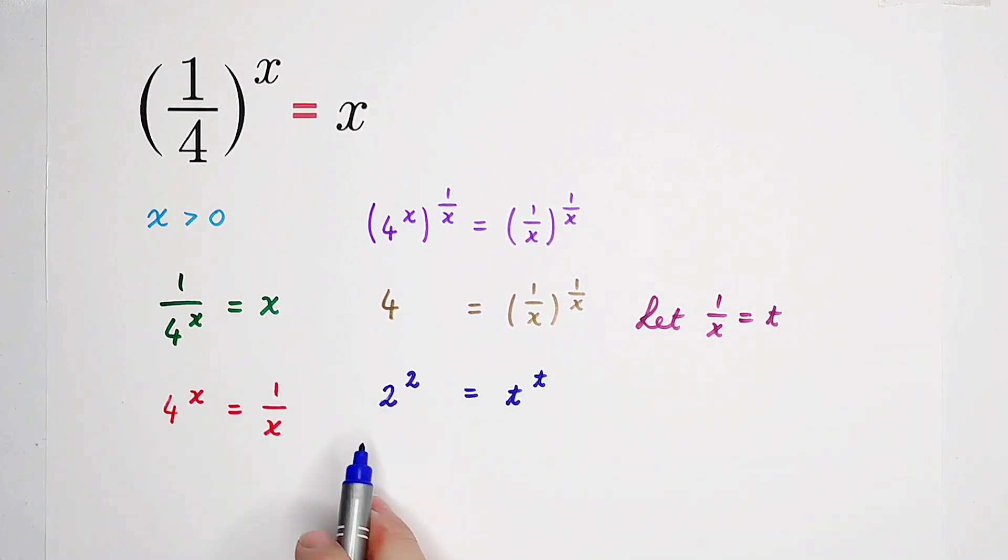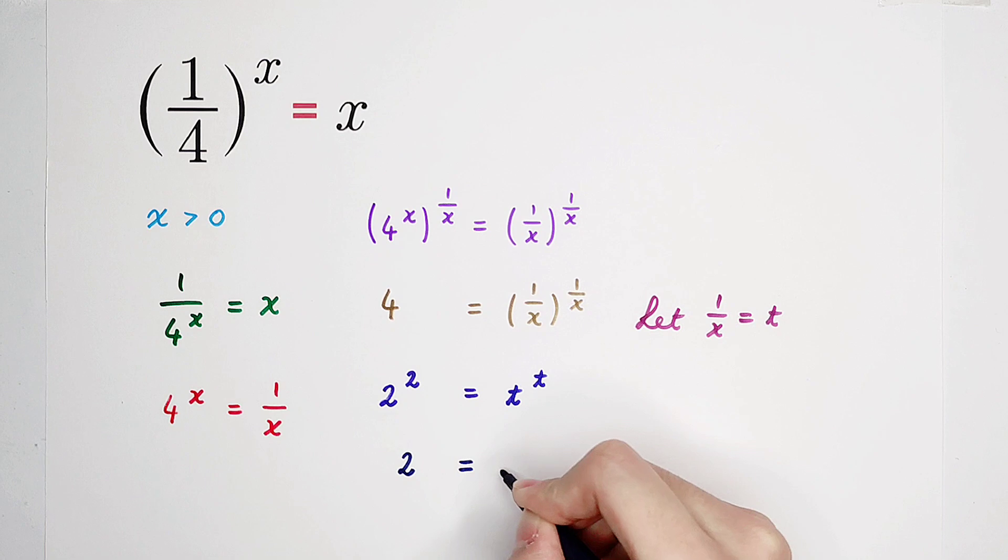Now, you can see, two to the power of two equals t to the power of t. Then, of course, t is equal to two. So two should be equal to t.